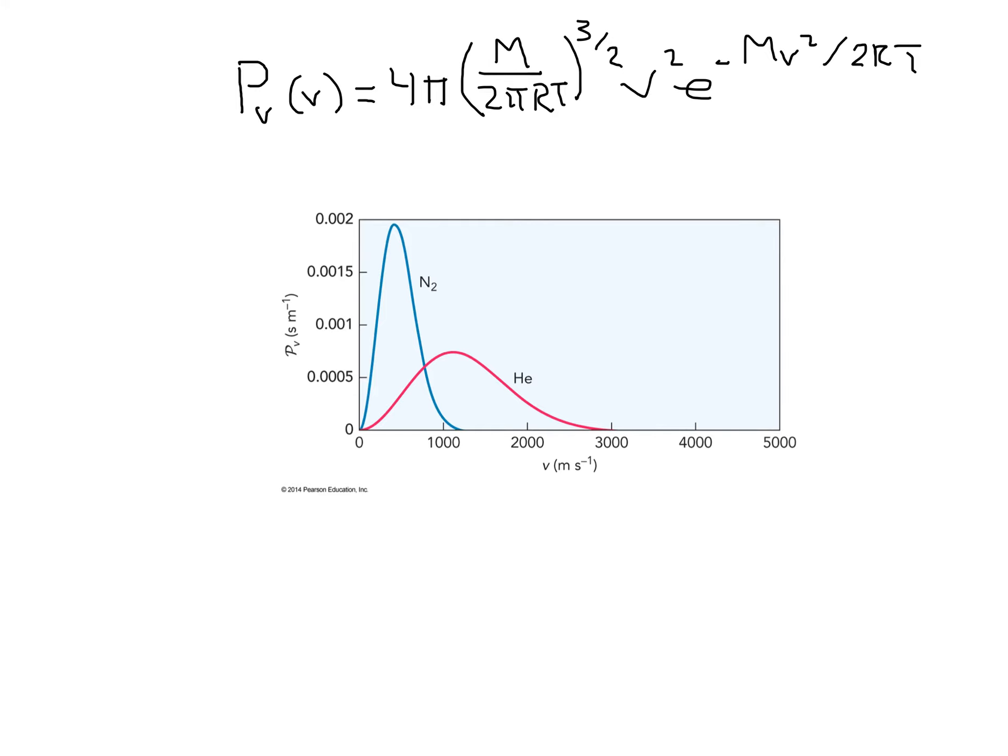If we graph this equation for a particular molecular weight, say nitrogen or helium, as shown on this graph, initially, there's no probability that a particle will be at rest, going at zero velocity.